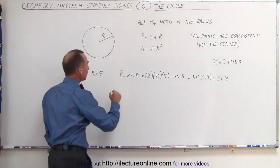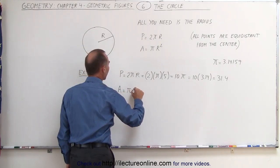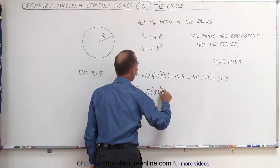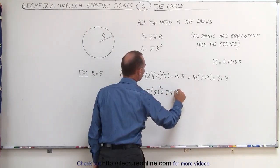Now to find the area, that is equal to π times r squared. In this case, that's equal to π times 5 squared, or 25 times π.